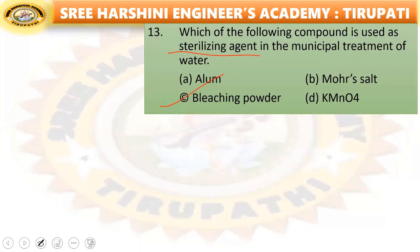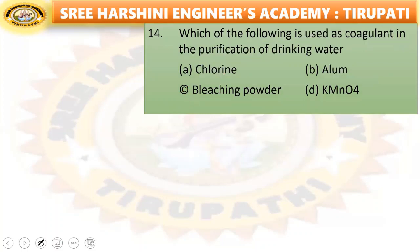Next: which of the following is used as a coagulant in purification of drinking water — chlorine, alum, bleaching powder, or KMnO4? Alum is the coagulant used in purification of drinking water.